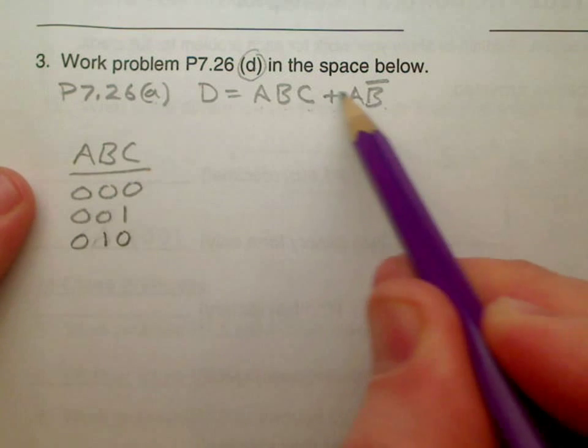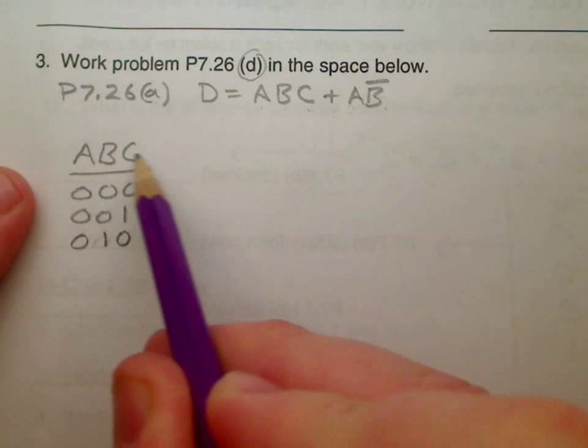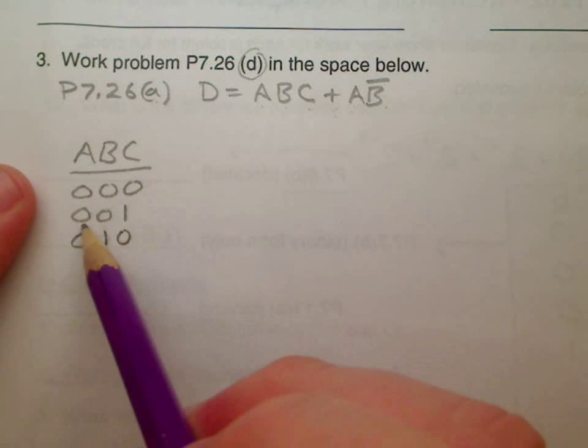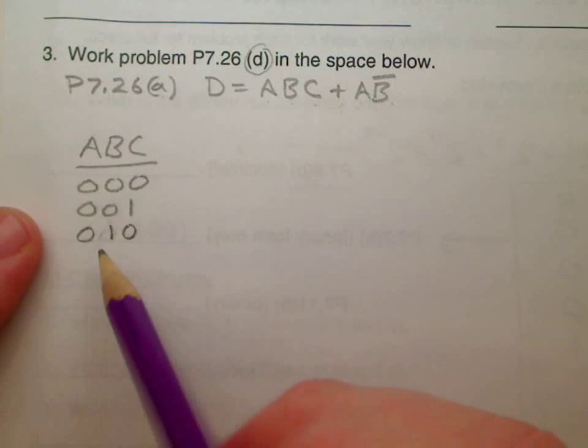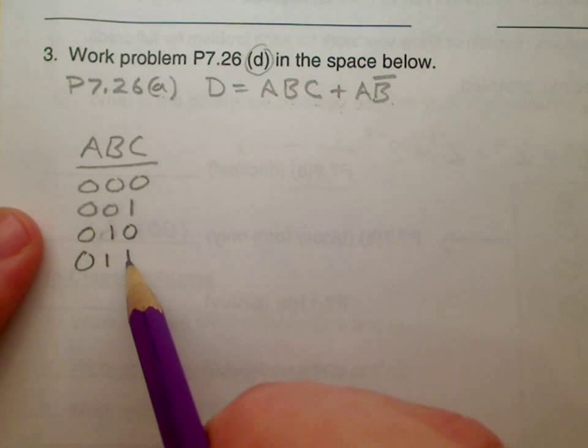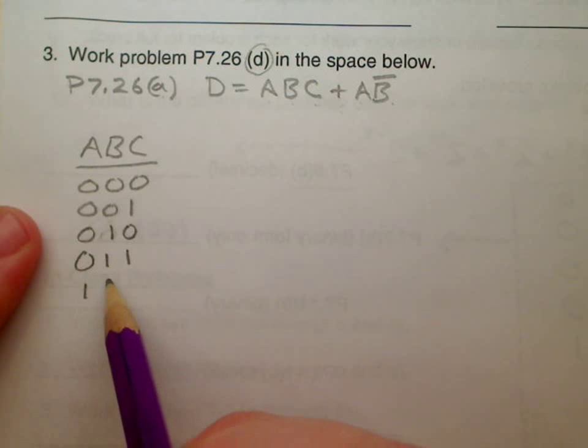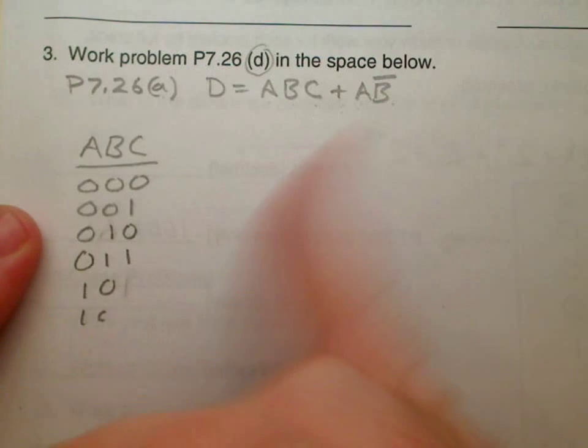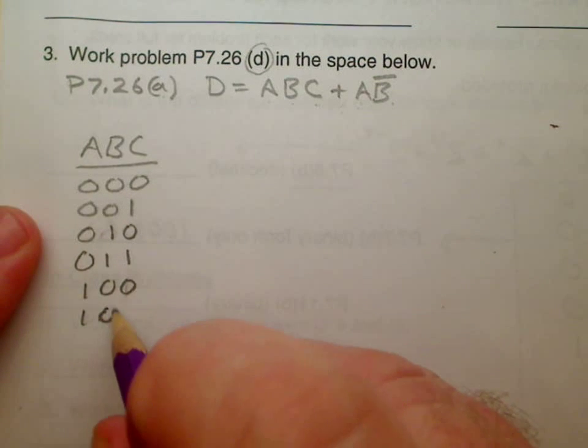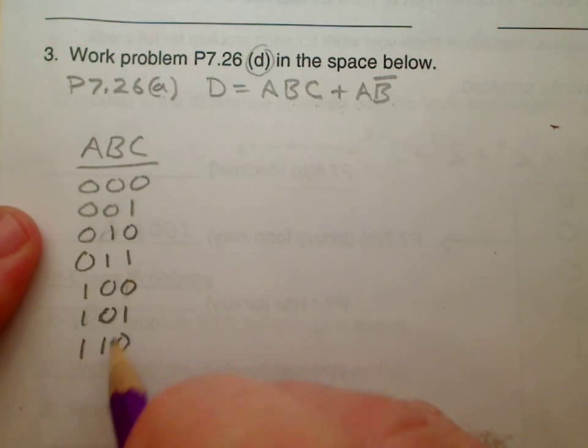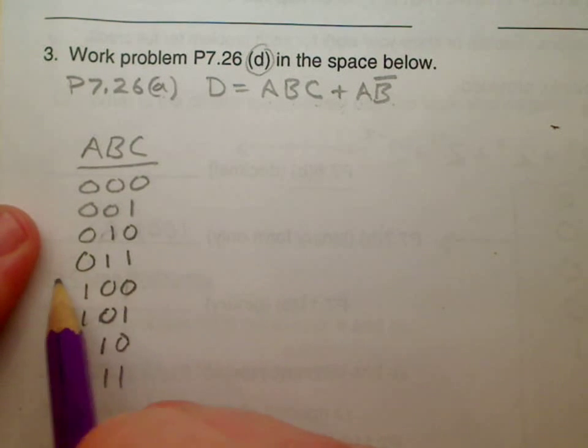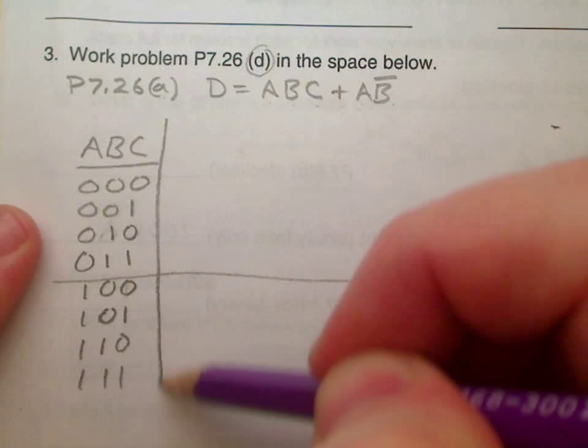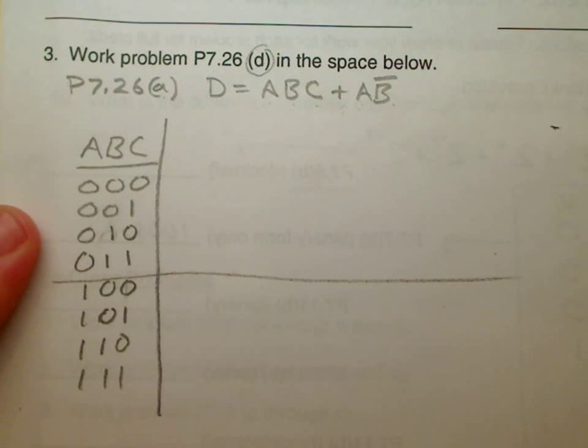You have your inputs over here: A, B, and C. Start with 0-0-0, 0-0-1, and so forth. When you count in binary, that's the number three, and here's number four. Well, that's not the number four - that's number four, five, six, and seven.